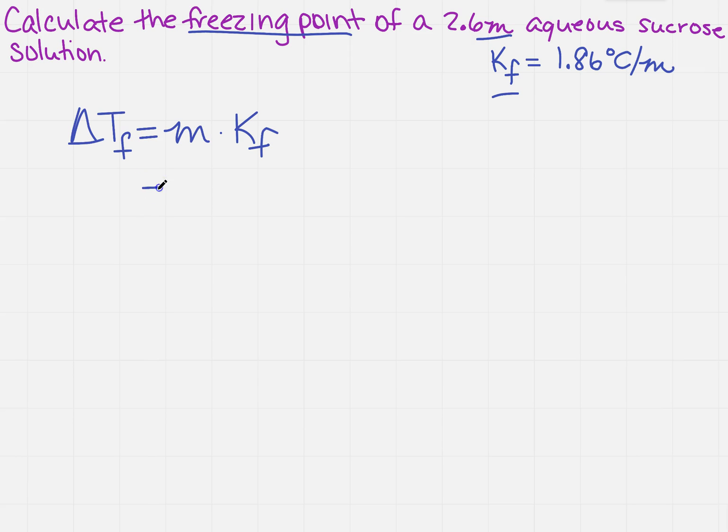Well, like we said, we have the molality, so that's 2.6 molality times the constant, which is 1.86 degrees C over the molality.